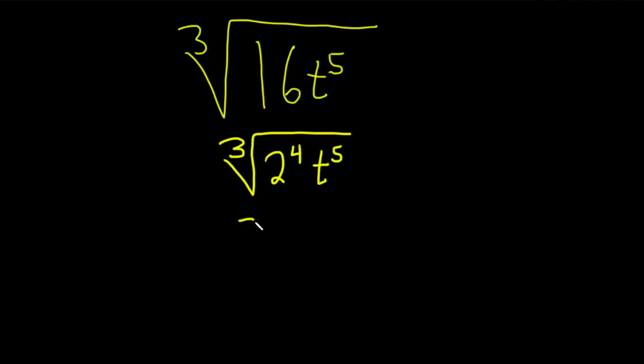So let's do that. So 2 cubed. And we can also get a t cubed from the 2 to the 5th. From the t to the 5th. This is t cubed.